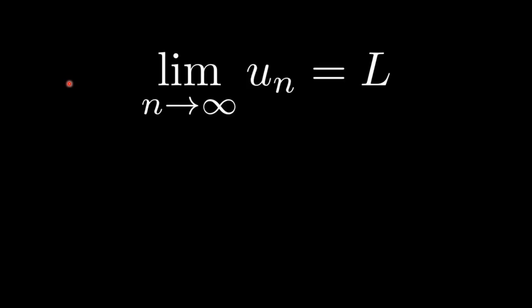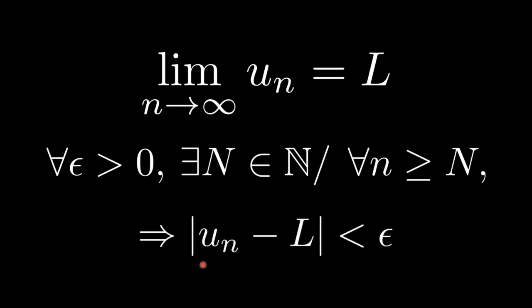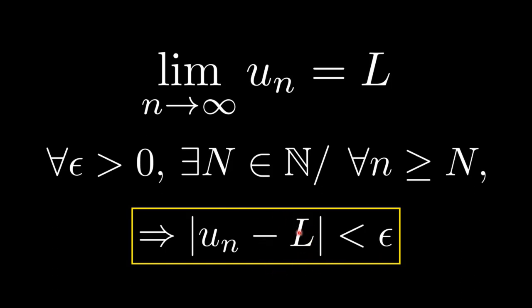The limit of the sequence U sub n as n approaches infinity equals L, if for all epsilon greater than zero, there exists a big N integer such that for all little n greater than or equal to big N, we have the distance between U sub n and L is less than epsilon. This inequality holds under this condition.